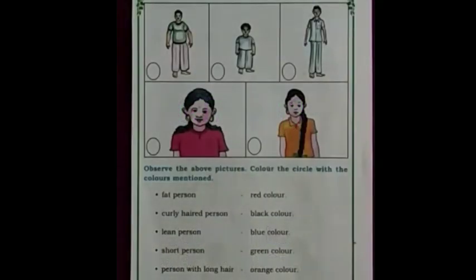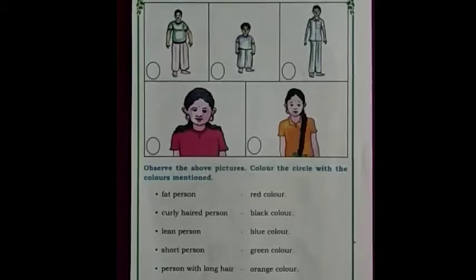Children, observe the above pictures. Color the circle with the colors mentioned. Color the fat person with red color. Curly hat person with black color. Blue color for lean person. And green color for short person.